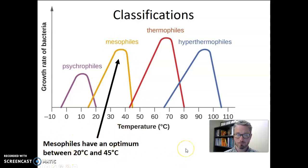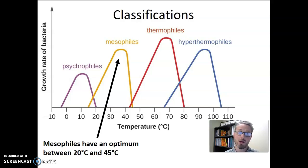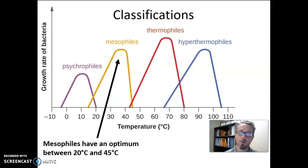Let's start with the mesophiles. Mesophiles have an optimum temperature somewhere between 20 and 45 degrees Celsius, and many have an optimum right around 37 degrees Celsius — that's body temperature. It's these mesophiles that thrive in the human body, making up our microbiome — all the microbes living in and on your body right now. Mesophiles are also potential pathogens: bacteria that, if we are exposed to them, could make us sick. For a microbiology class focused on human health, they are the most important group.